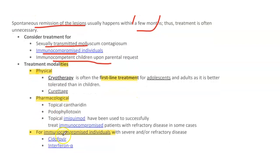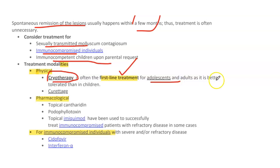Treatment modalities include physical, pharmacological, and special therapy for immunocompromised individuals. Physical treatment includes cryotherapy, where lesions are frozen with liquid nitrogen; this is the first-line treatment for adolescents and adults as it is better tolerated than in children. Pharmacological options include topical cantharidin, which is preferred in children, and podophyllotoxin.